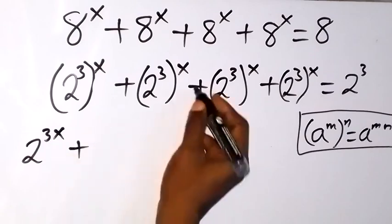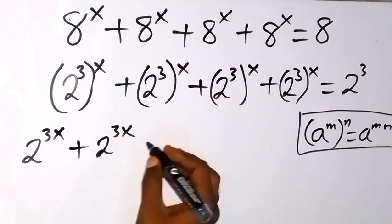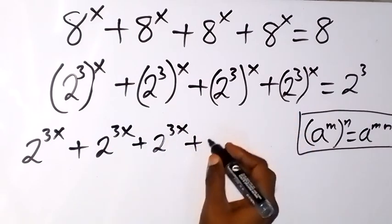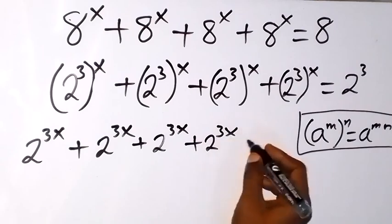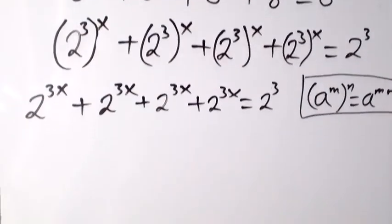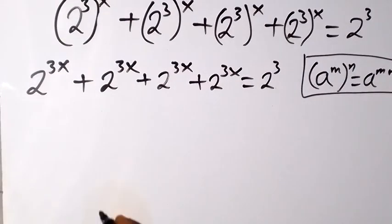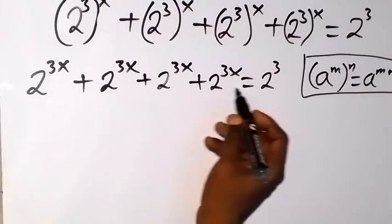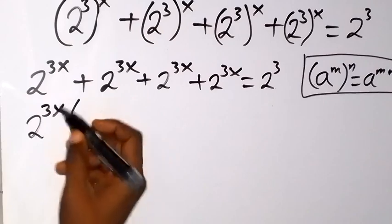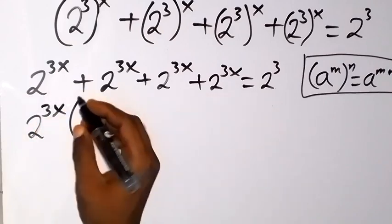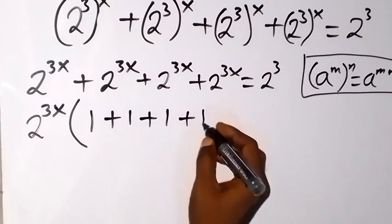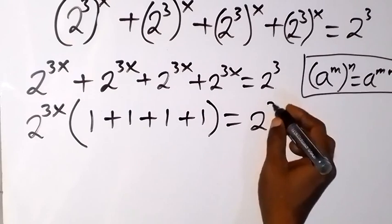This gives us 2^(3x) + 2^(3x) + 2^(3x) + 2^(3x) = 2^3. From here, we can solve further. Since 2^(3x) is common, we take it out and we have 2^(3x) times (1 + 1 + 1 + 1) equals 2^3.